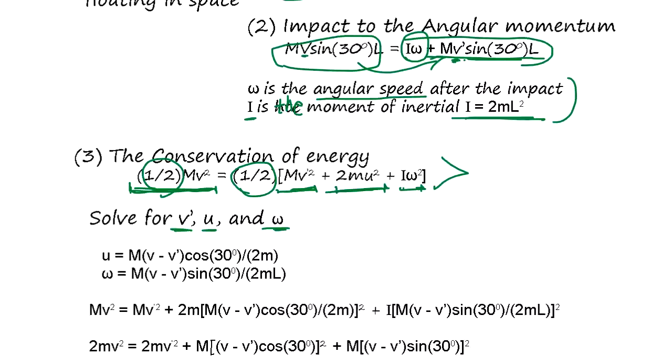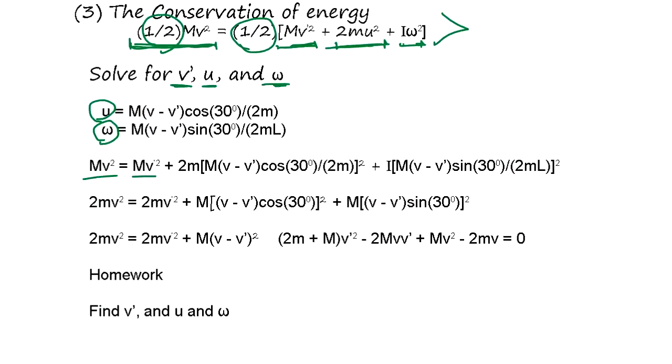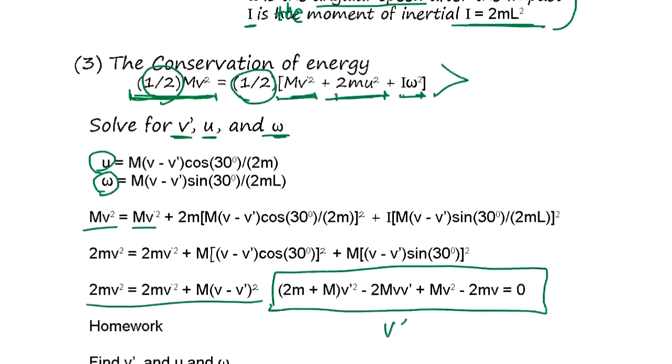Unknown and three equations, so we can solve it. So first step is to calculate U and omega and plug into this energy conservation equation and simplify. So what happens is this is going to be a quadratic equation to solve for V prime.